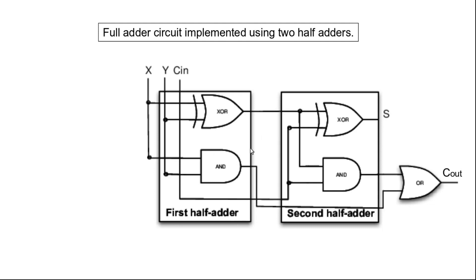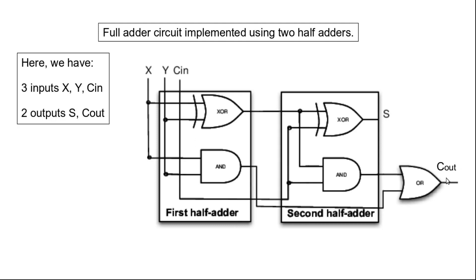This is the first half adder and this is the second half adder. The first half adder is adding X and Y, producing the sum output and the carry output. The sum output of the first half adder we are adding with the third bit, generating the final sum of the circuit. The two carries are passed through an OR gate to generate the carry out. So we have three inputs X, Y, and C-in, and two outputs S and carry out.